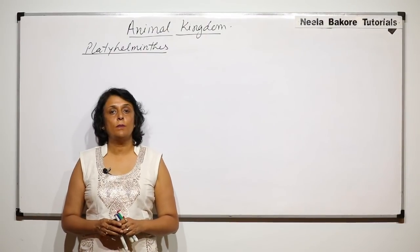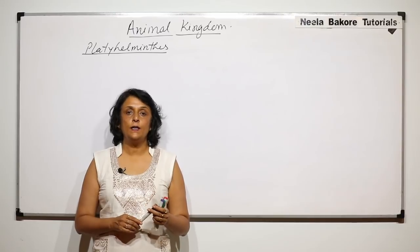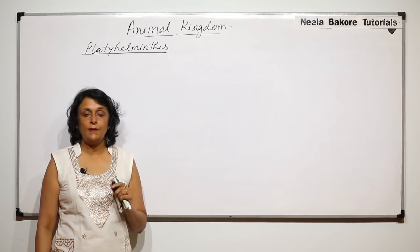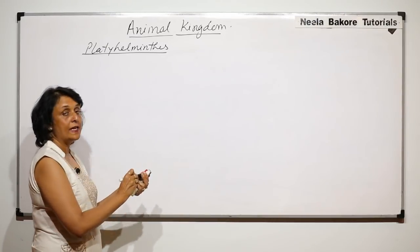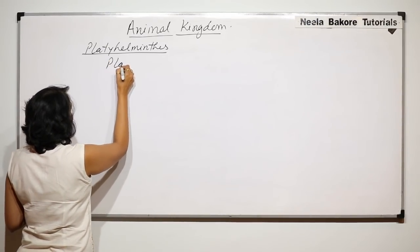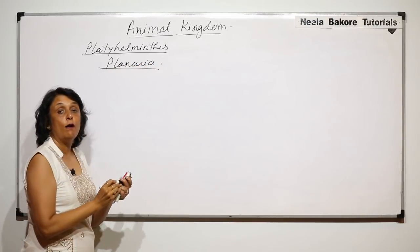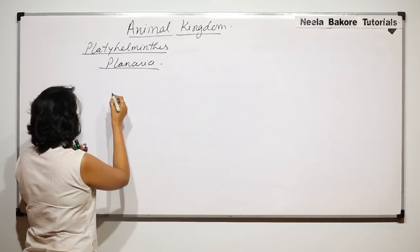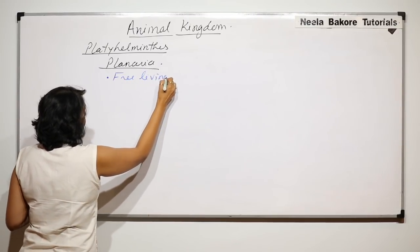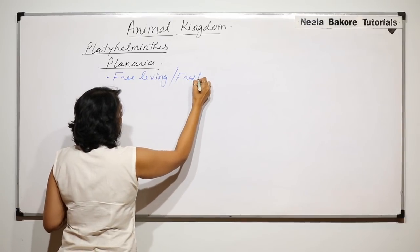In this part we will talk about two more examples of the phylum Platyhelminthes. We have already talked about Taenia solium, that is tapeworm. Now the example we are talking about is Planaria. Planaria is a free-living platyhelminth and they are found in fresh water.